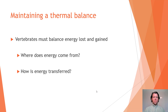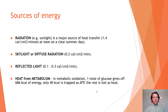Vertebrates must maintain a thermal balance by balancing energy lost and gained. Starting with radiation as a major source of heat transfer: there is about 1.4 cal/cm²/min at noon on a clear summer day; diffuse (skylight) radiation is about 2.2 cal/cm²/min; and reflected light is about 0.1 to 0.3 cal/cm²/min.